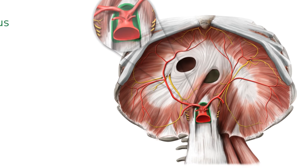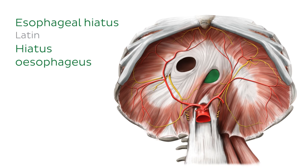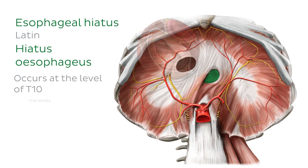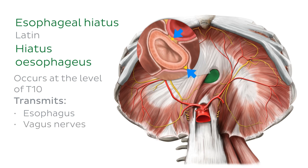Next, we have the esophageal hiatus, which occurs at the level of T10. This opening transmits the esophagus, the vagus nerves, and the esophageal arteries.